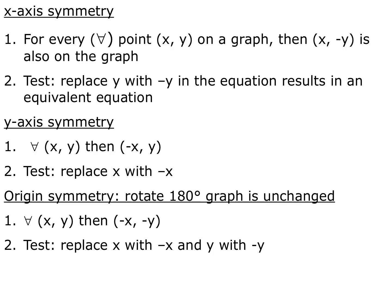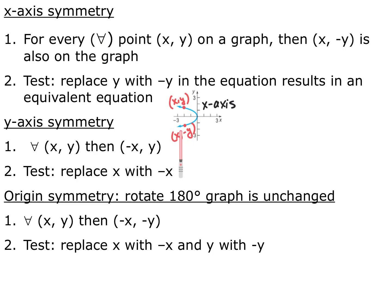We have three tests, one for each type of symmetry. For x-axis symmetry, for every point (x, y) on the graph, there's a matching point (x, −y) also on the graph — every x-coordinate has both a positive and a negative y-coordinate. The way we test this algebraically is to replace every y with negative y in our equation and see if we can simplify it back down to the original equation.